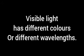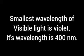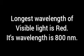What is the electromagnetic spectrum? We know that visible light has seven colors, where the smallest wavelength is violet at 400 nanometers and the longest wavelength of visible light is 800 nanometers.